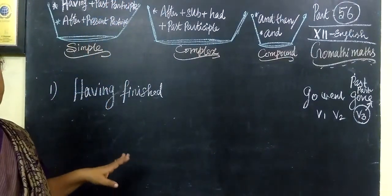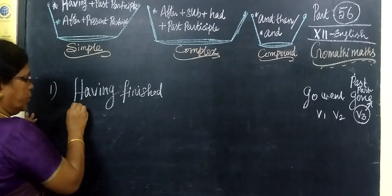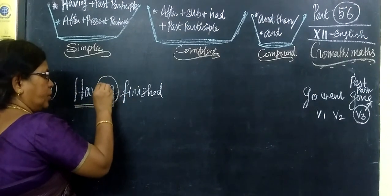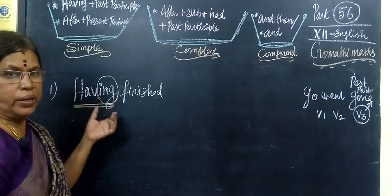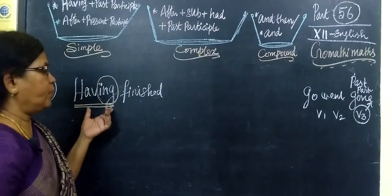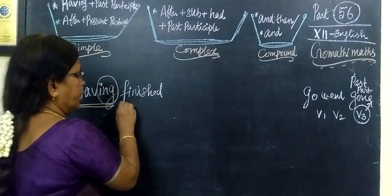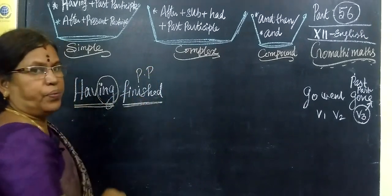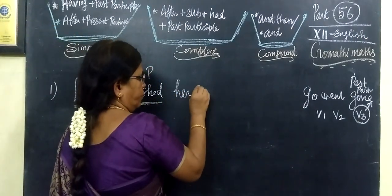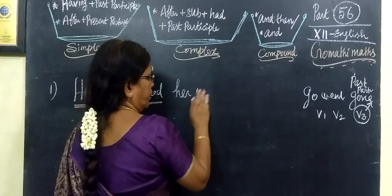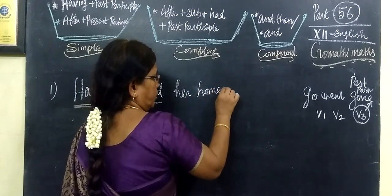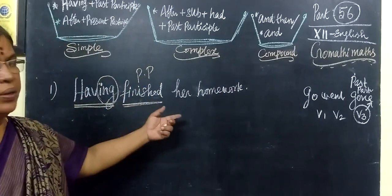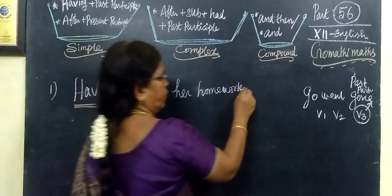When you see the sentence, you must look at the structure: ing form. Give importance to whether it is the ing form — it is 'having,' the ing form, plus ed. Ed means past participle. So: having finished. Having finished what? Having finished her homework. She went to the bed.